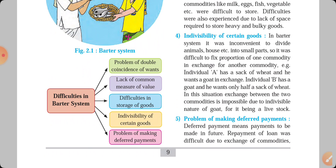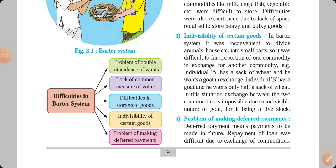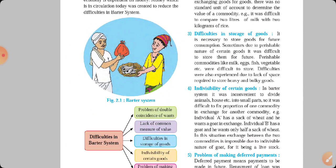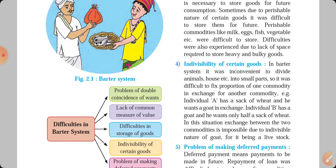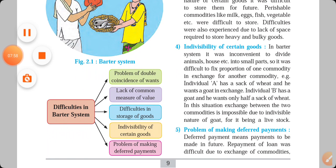There are five difficulties in the barter system. In the barter system, there were many problems, and to overcome those problems, money had been invented. The barter system is basically a system in which goods are exchanged for goods, without the involvement of money. In the next session, we will see the difficulties in the barter system in detail.